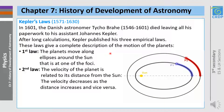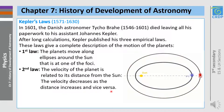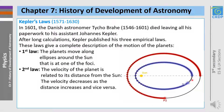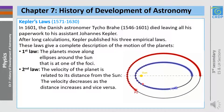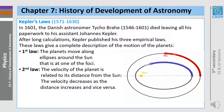As for the second law, the velocity of the planet decreases as the distance between the sun and the planet increases, and vice versa. Let's use this animation to explain it. Take a look at this blue planet: when it gets closer to the sun, its velocity increases, and when it gets away from the sun, its velocity decreases. The same, of course, for the red planet.